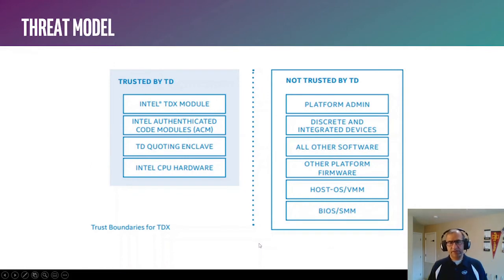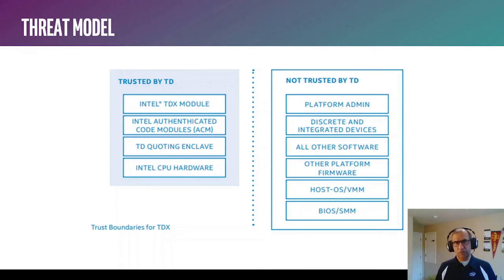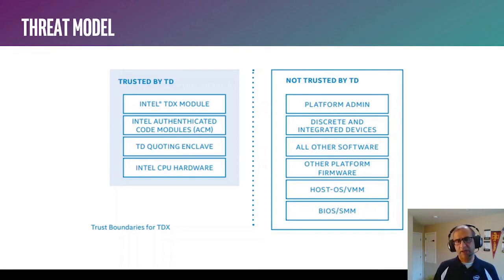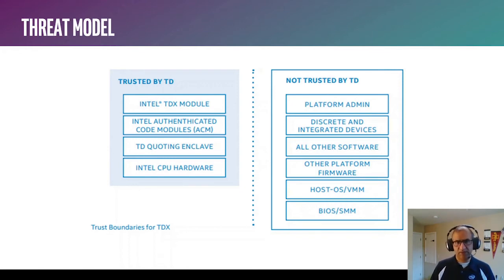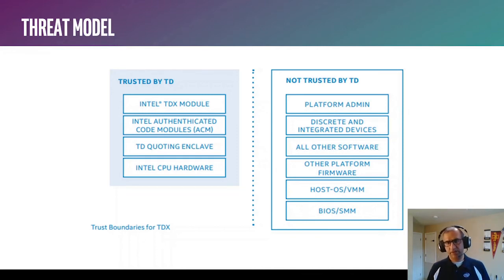The three key capabilities in the trusted computing base are: the Intel TDX module, the SEAM loader ACM used to load the TDX module, and the CPU hardware. The fourth key capability is a quoting enclave. We leverage the quoting and attestation infrastructure that Intel SGX offers to make it simpler for Intel TDX users to leverage the same attestation infrastructure. All other remaining capabilities on the platform — including devices, host software, platform firmware, BIOS, SMM, the host OS, and the VMM — are not trusted by the TD and are outside the TCB for Intel TDX.